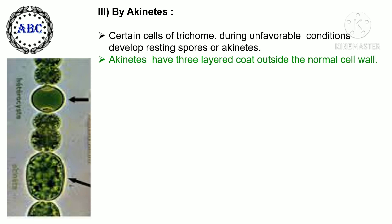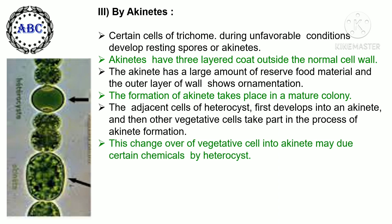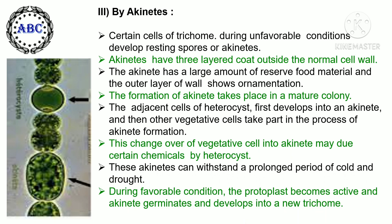Third, by akinetes: certain cells of the trichome, during unfavorable conditions, develop resting spores called akinetes. Akinetes have a three-layered coat outside the normal cell wall. They contain a large amount of reserve food material and the outer layer of the wall shows ornamentation. Akinete formation takes place in mature colonies; cells adjacent to heterocysts first develop into akinetes, and then other vegetative cells take part. These akinetes can withstand prolonged periods of cold and drought. During favorable conditions, the protoplast becomes active, and the akinete germinates and develops into a new trichome.